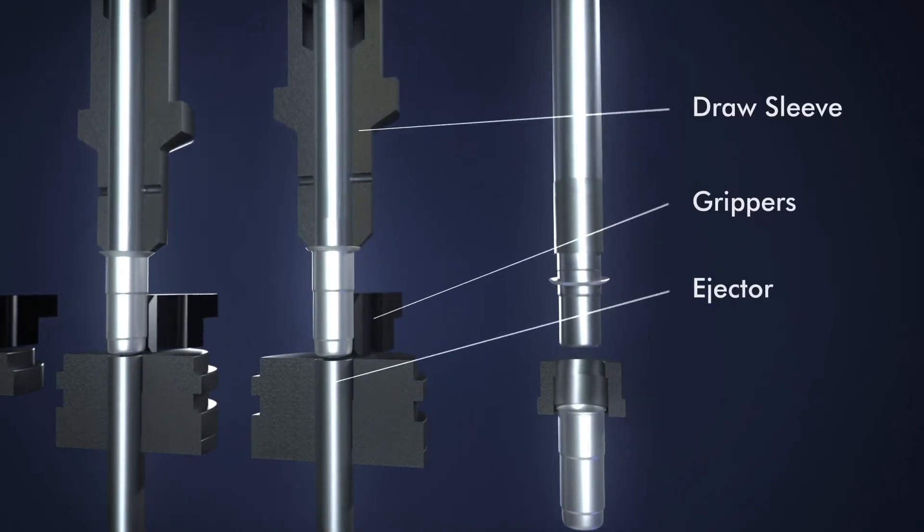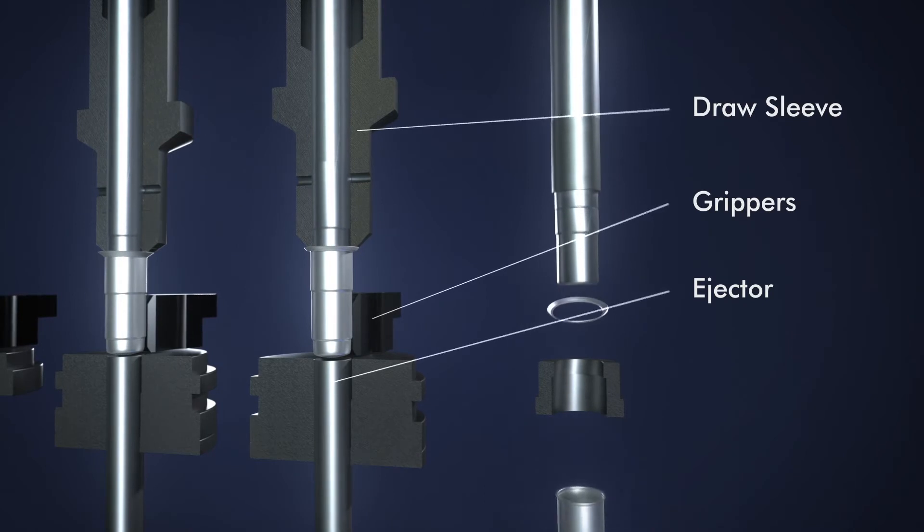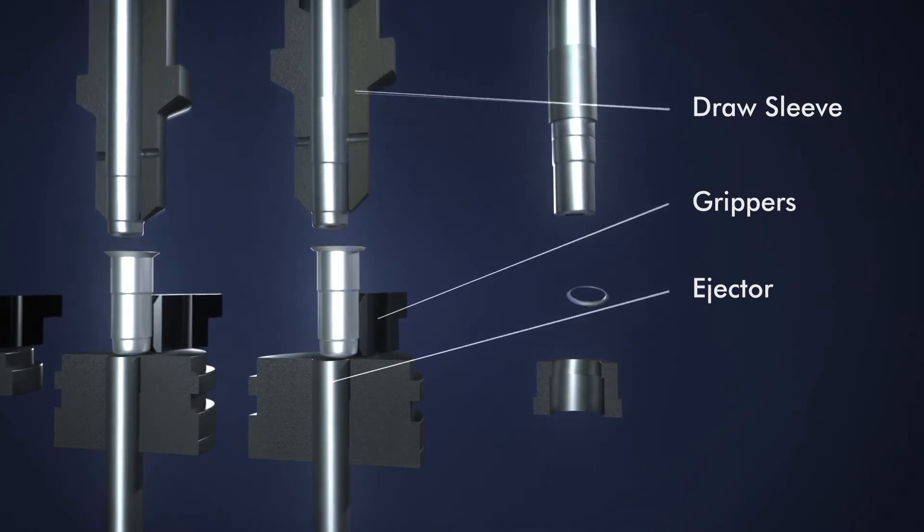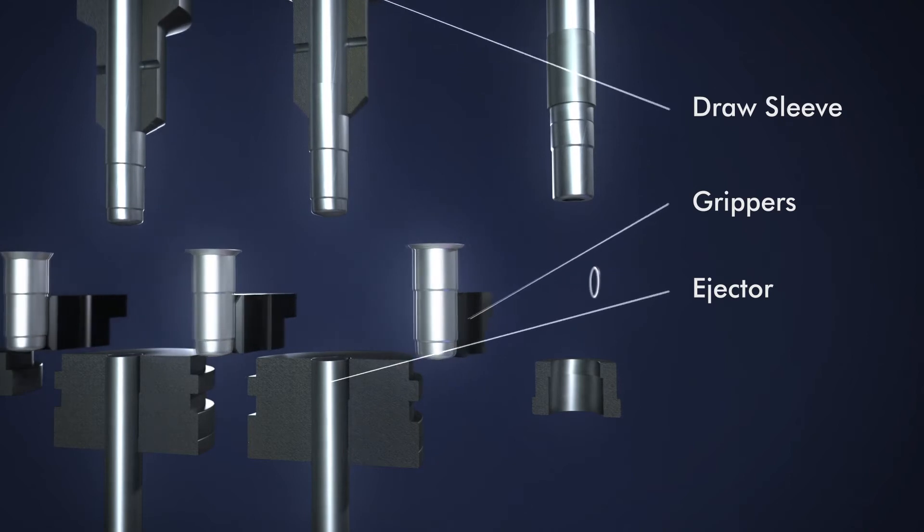After every draw, the punch moves up again, and an ejector lifts the workpiece back to the transfer level, where it is stripped from the punch by the draw sleeve.